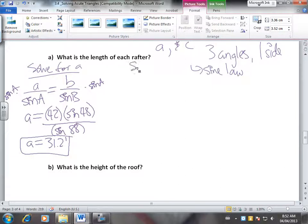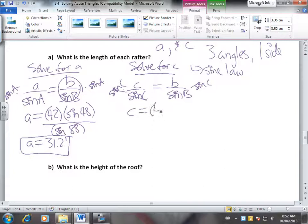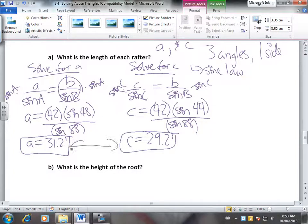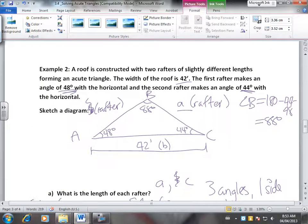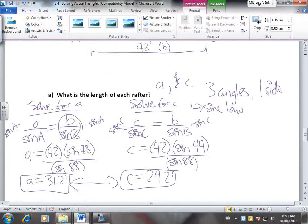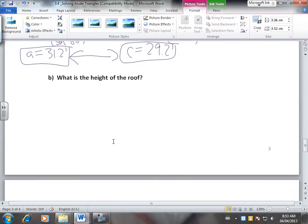Then we want to solve for C. And again, we can use sine law, and again, we can just use our given to be as accurate as possible. So we'll have C over sine C equals B over sine B. We multiply both sides by sine C. And those will cancel out. So we'll get C equals, again, side B was 42, times sine 44, divided by sine 88. Again, be very careful with your brackets here. And we'll get C equals 29.2 feet. A and C are different, which is good, because we were told that the two rafters were slightly different lengths. And if we look at our answer, 31.2 and 29.2, that's not very much different, so that's good.